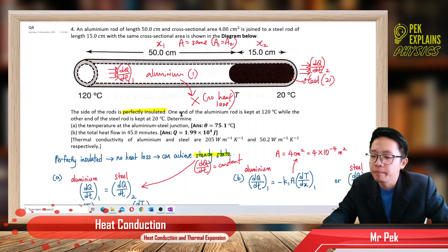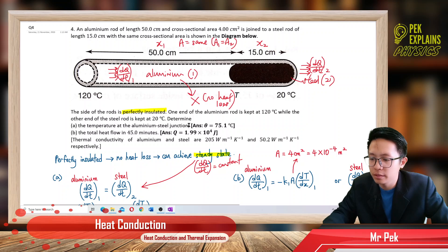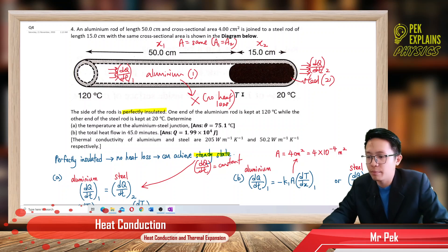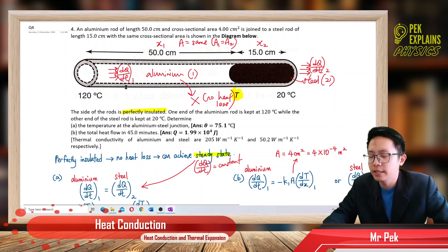One end of the aluminium rod is kept at 120°C while the other end of the steel rod is at 20°C. The question asks us to find the temperature T at the aluminium-steel joint. So we need to identify which is the initial temperature and which is the final temperature.